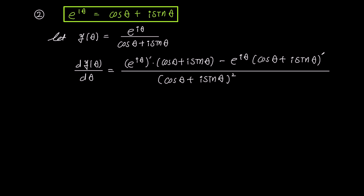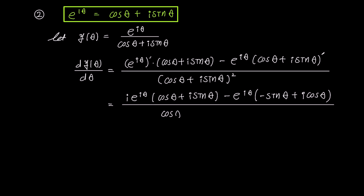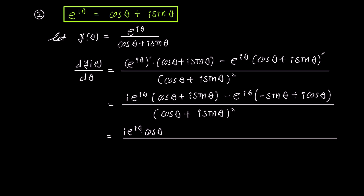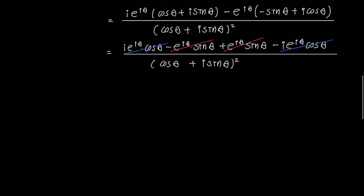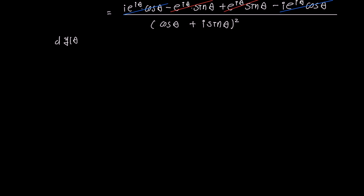When we differentiate the terms in the numerator, we get i times e to the power of i theta times cosine theta plus i sine theta, minus e to the power of i theta times minus sine theta plus i cosine theta, and the denominator remains cosine theta plus i sine theta squared. Expanding the terms in the numerator, we observe that all terms cancel out upon expanding as shown on the screen, resulting in 0. In other words, dy over d theta equals 0.